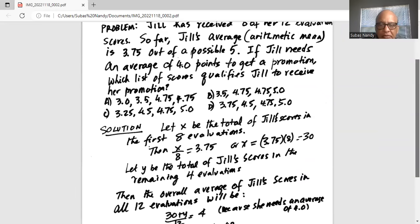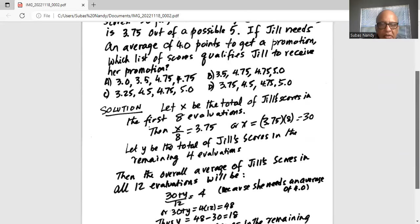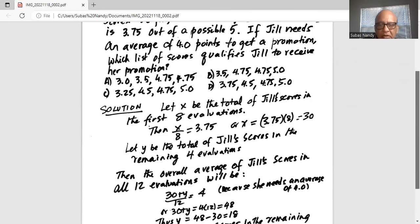Let y be the total of Jill's scores in the remaining 4 evaluations. Then the overall average of Jill's scores in all 12 evaluations will be 30 from the first 8 plus y from the remaining 4.